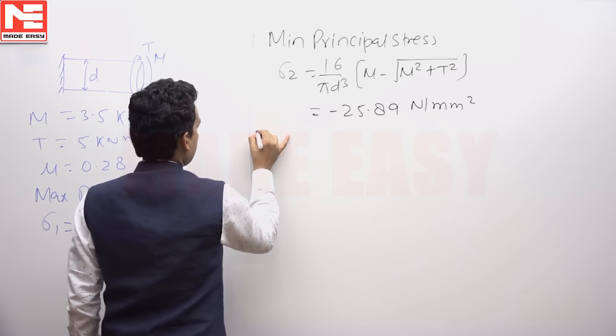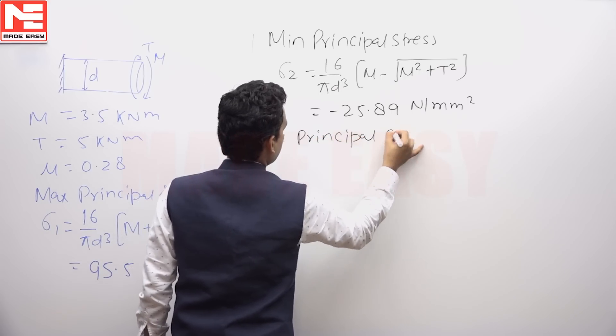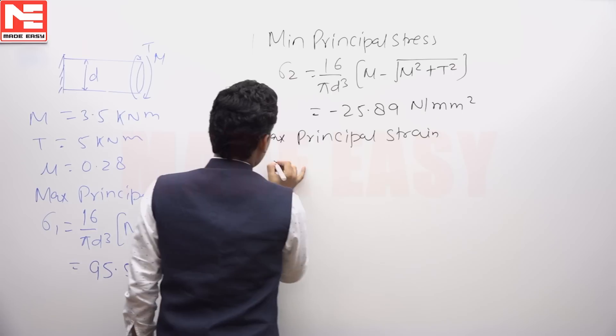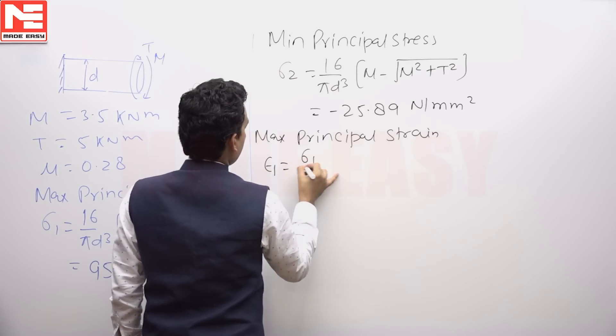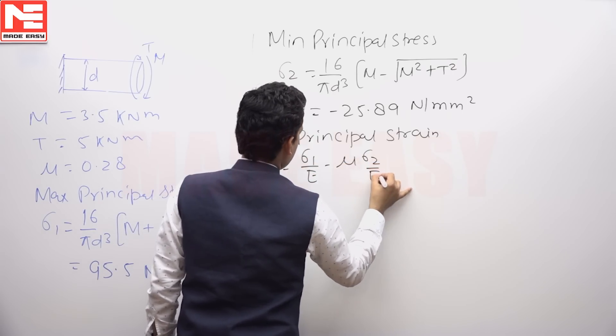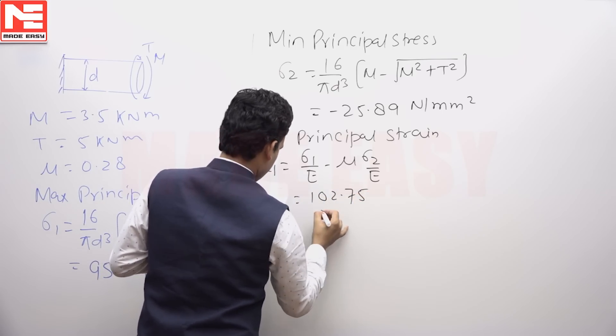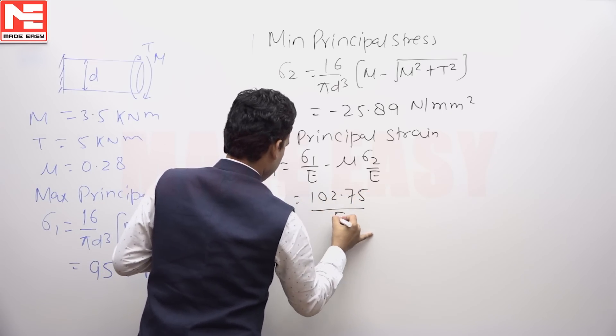For the maximum principal strain epsilon 1, the formula is: ε₁ = σ₁/E - μ(σ₂/E). After calculating, you get 102.75/E.